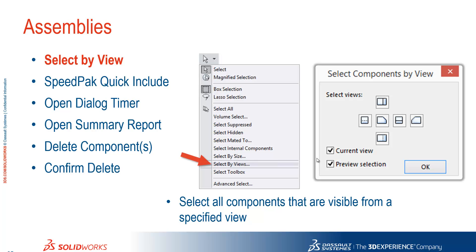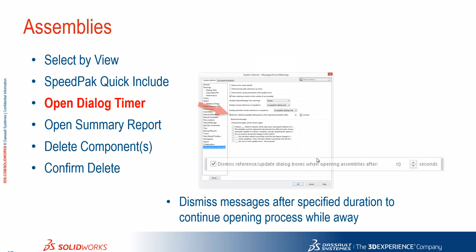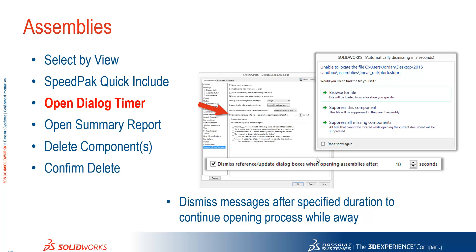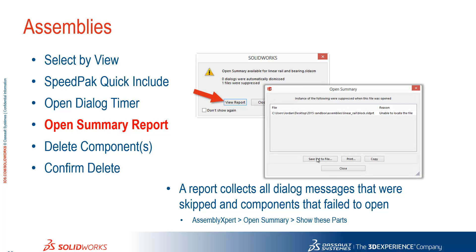Within assemblies we've got a new select by view option. The speed pack includes a quick include option. We've also got an open dialogue timer which will automatically dismiss messages after a specified number of seconds, so you no longer need to walk away from your desk and come back to a message that you haven't dismissed. We also get an open summary report now as well.